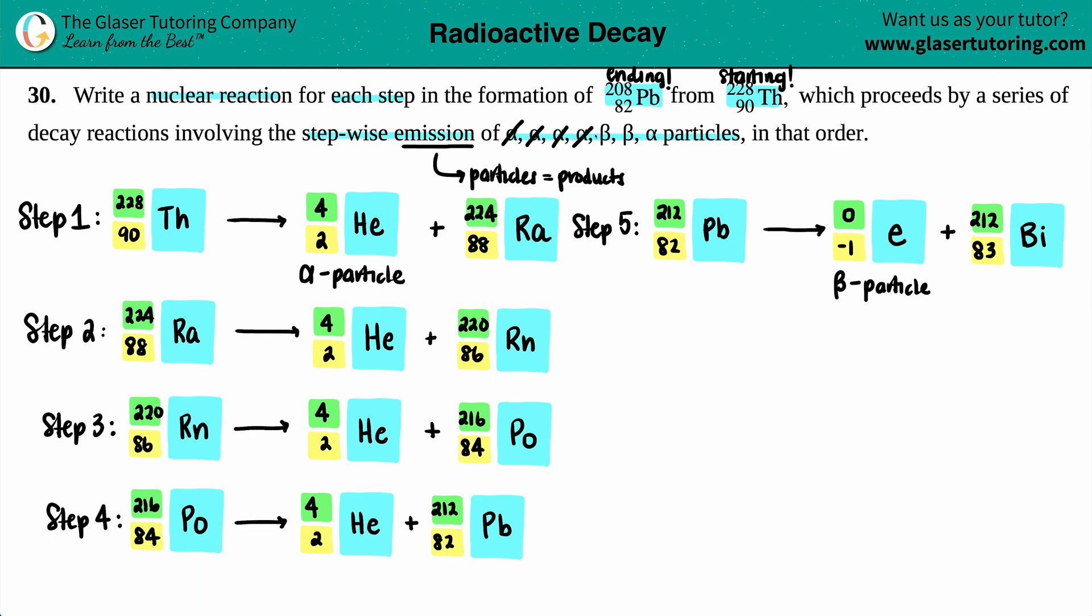Step 6: Pick up where you last left off. We got bismuth, 83, 212. What are we doing now? Another beta. So that's just an electron, negative 1, 0.